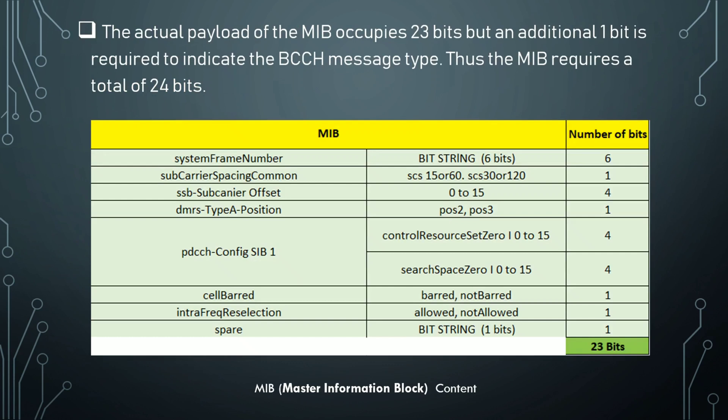The actual payload of the Master Information Block occupies 23 bits, but there is one additional bit required to indicate the BCCH message type — what type of BCCH message it is. Thus the MIB requires a total of 24 bits. In the table below we can see the mapping of all the bits.